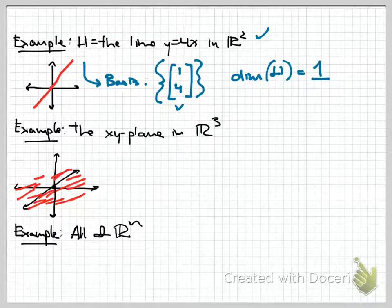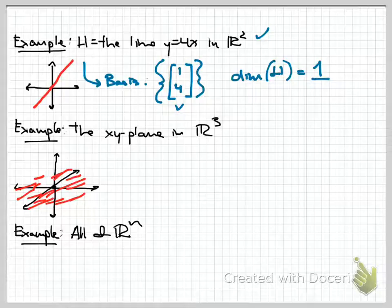This agrees with our intuition: we would definitely say a line in R2 is one-dimensional. Even though it sits inside a two-dimensional world, the line itself is one-dimensional, and following the definitions confirms that.